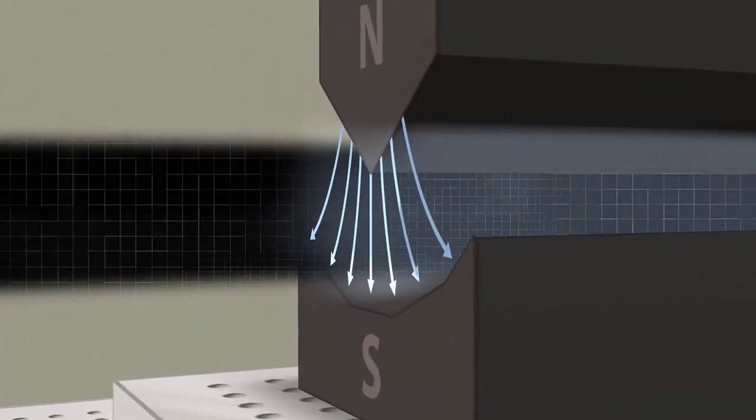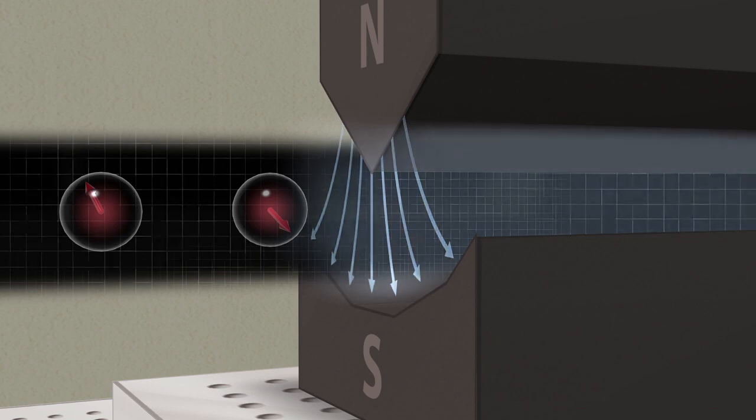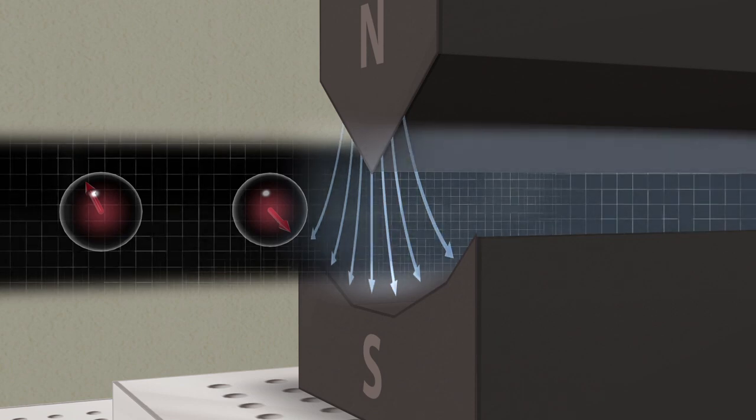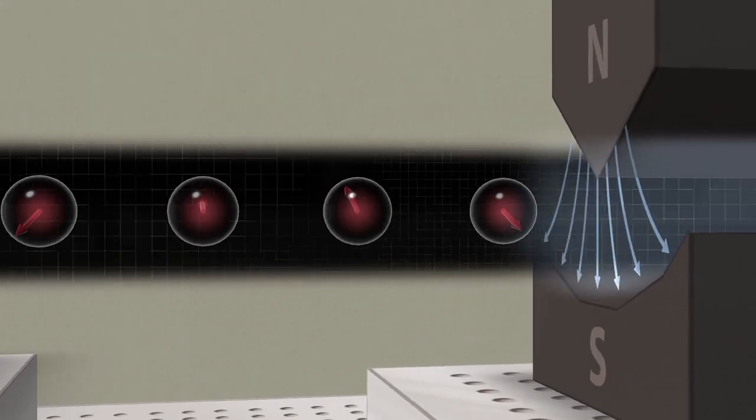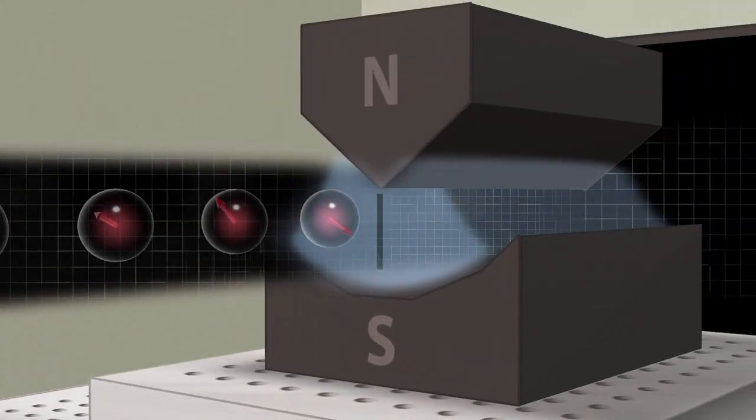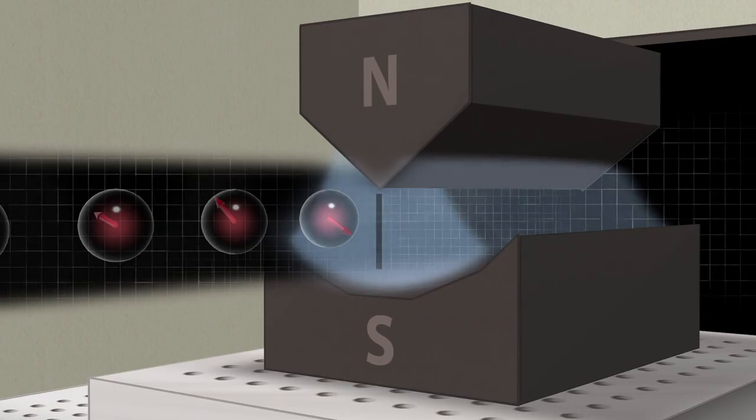Let's have a closer look at the quantum mechanical measurement process in the Bloch sphere. The spin has some arbitrary orientation before it interacts with the inhomogeneous magnetic field. The inhomogeneous magnetic field acts as a filter. It is presented here as a slot.